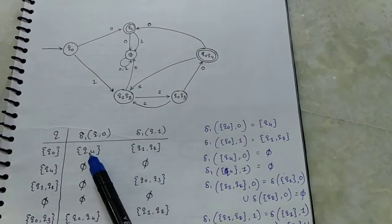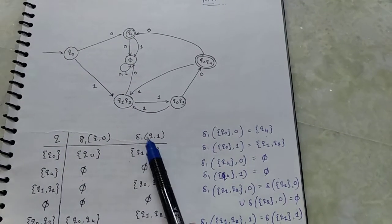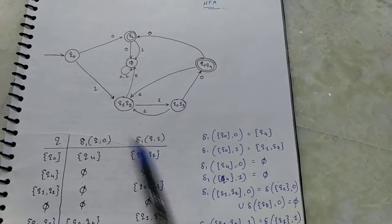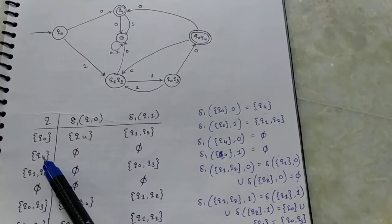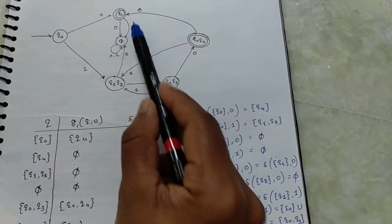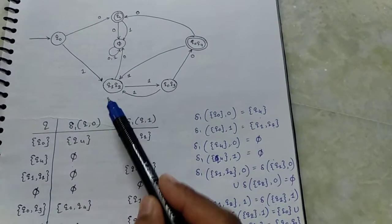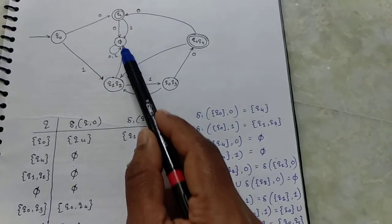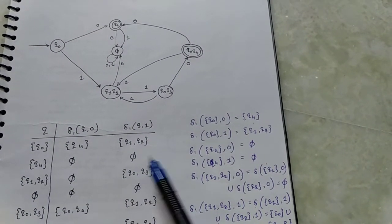Now no new states, so draw the FA for this table. Starting from q0: q0 to 0 reaches at q4. Next, q0 to 1 reaches at q1q2. q4 to 0 is phi, q4 to 1 is phi.